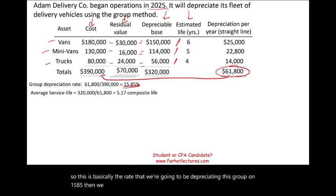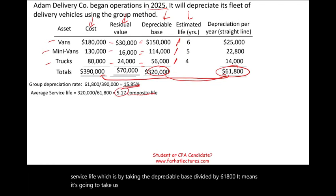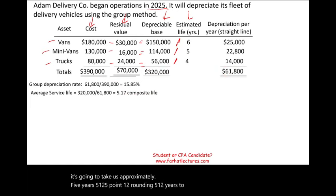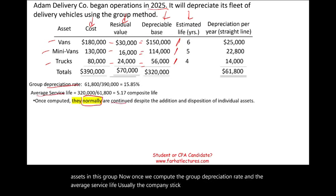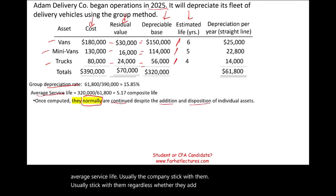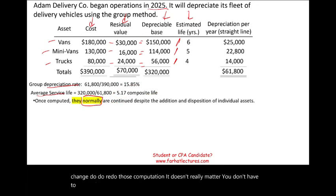We can also find the composite life — the average service life — by taking the depreciable base divided by 6,180, which gives us approximately 5.12 years to depreciate the whole group. Once the group depreciation rate and average service life are computed, companies typically stick with them regardless of whether they add or dispose of individual assets, since additions and disposals should average out. Sometimes companies do recompute, but you don't need to worry about this for the CPA exam.